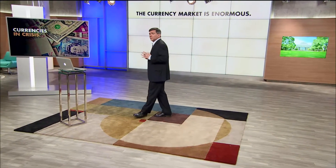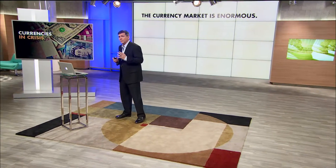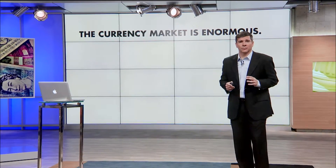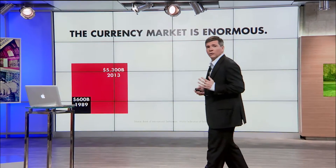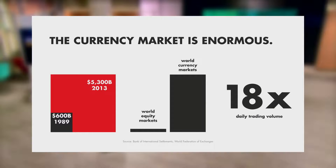The currency market is enormous. The trading volume on the currency market was already 600 billion dollars per day in 1989. Today, it's more than 5 trillion dollars per day. That's a big number — it means that the currency markets trade the equivalent of the US annual GDP in a matter of just 3 days.